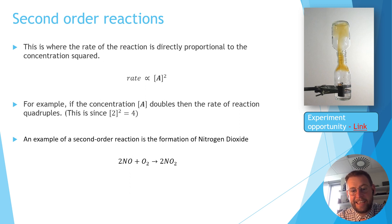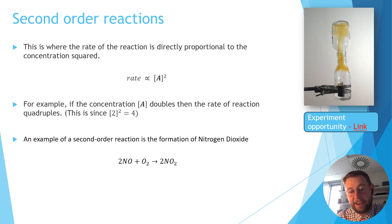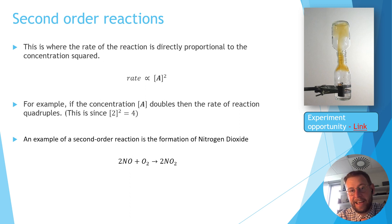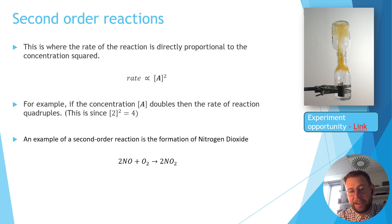A good example of this is when we oxidize nitrogen oxide and get nitrogen dioxide, which is a very horrible smelly gas. This works in that sort of relationship — the rate of reaction when you mix these two chemicals together is proportional to the concentration of the nitrogen oxide squared.